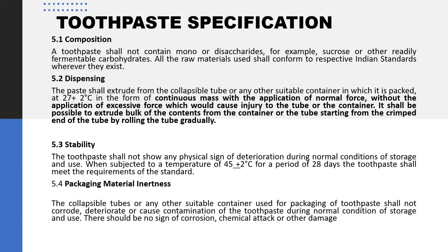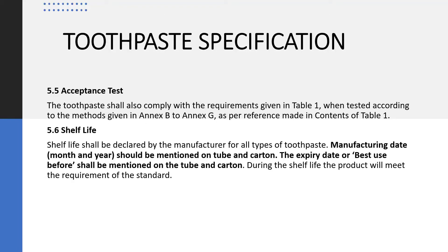For dispensing, it shall extrude from collapsible tubes or any other suitable container in which it is packed, and it should be stable. Regarding stability, it should not show any sign of deterioration during normal conditions of storage, and it shall remain stable for a period of at least 28 days. Regarding packaging material, collapsible metal tubes or any suitable metal used for packaging toothpaste shall not corrode, deteriorate, or cause contamination. The guidelines also specify that there has to be an acceptance test, an established shelf life, and details such as manufacturing month and year, expiry date, or best-before-use period.